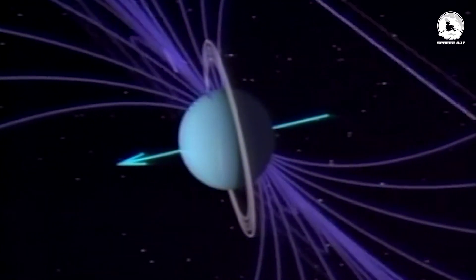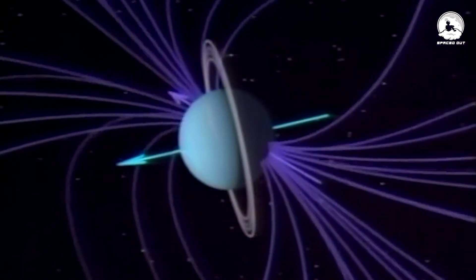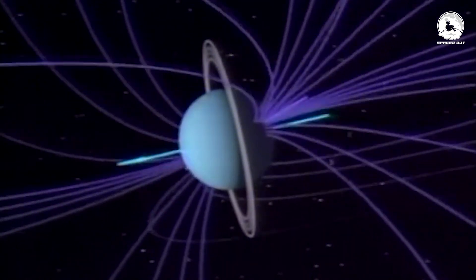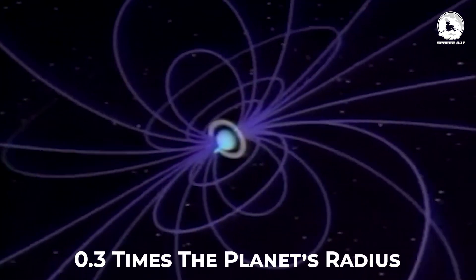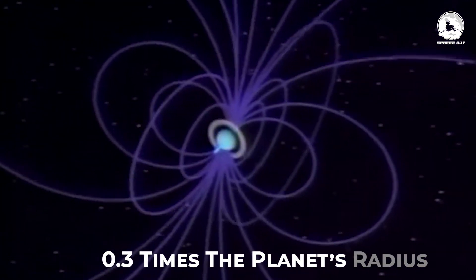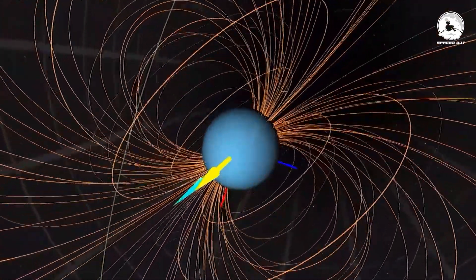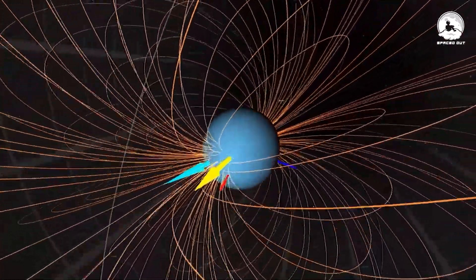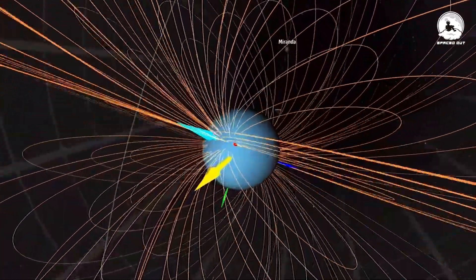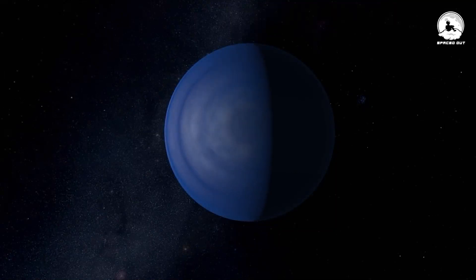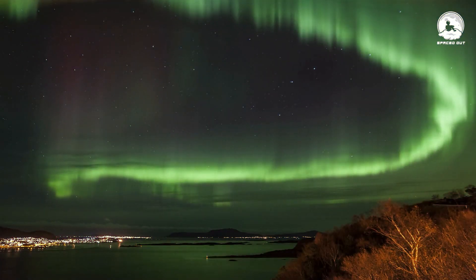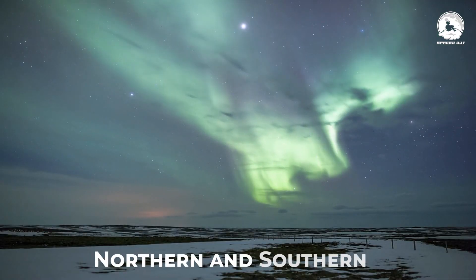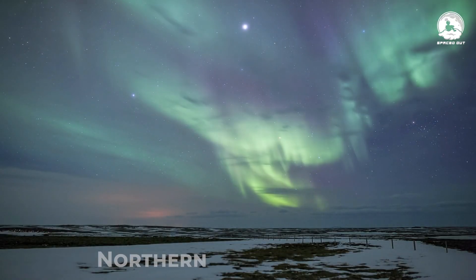Adding to its individuality is Uranus's weak and variable magnetic field, tilted by 59 degrees from its axis and offset by 0.3 times the planet's radius. However, this magnetic field is somewhat twisted and distorted by the solar wind, creating a fascinating effect. This distortion results in the generation of auroras, akin to our northern and southern lights. But with a twist: they occur at different locations and intensities.